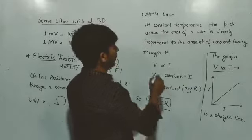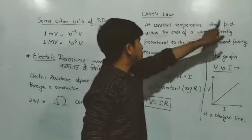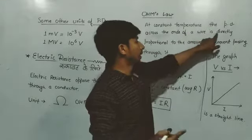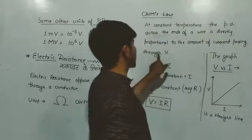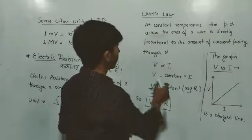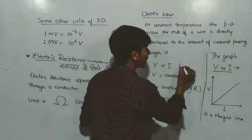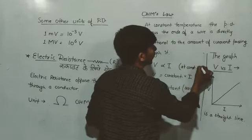So I will write it: at constant temperature the potential difference across the ends of a wire, which is V, is directly proportional to the amount of current passing through it. Means V is directly proportional to I, but condition is what? At constant temperature.